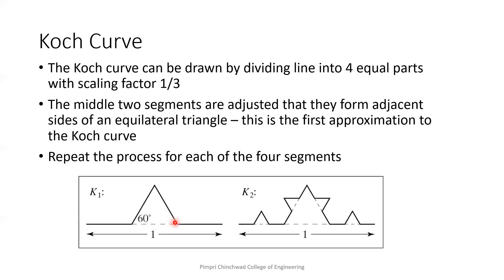And this is the first iteration, first approximation. Then we will repeat this process. Now this K1 curve is having four segments. So each of these four segments, we will do the same thing. We will divide this part into three different segments. One, two, and three. And then we will pick up the mid segment. This will be adjusted so that they form adjacent sides of an equilateral triangle like this. So this is the second approximation or the K2.